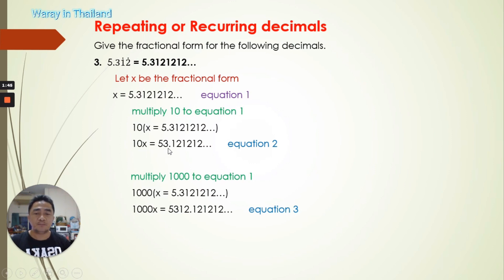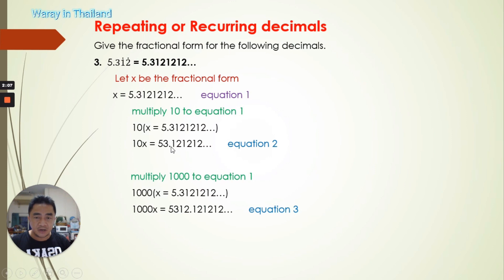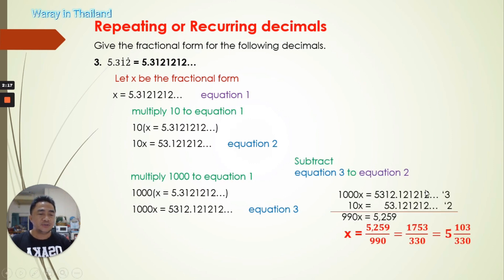Multiplying equation one by 10: 10x = 53.121212... — that is equation two. Multiplying equation one by 1,000: 1000x = 5312.121212... — that is equation three. You can see the repeating numbers are the same: 12, 12 in both equations. So we subtract equation two from equation three: the repeating decimals cancel to zero, and we get 5312 minus 53 = 5259, and 1000x minus 10x = 990x.